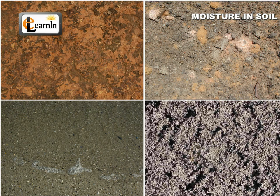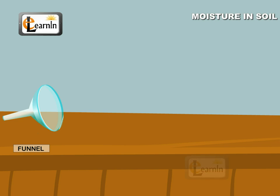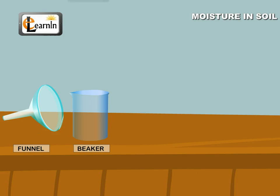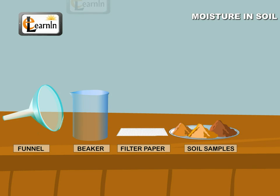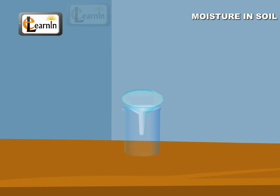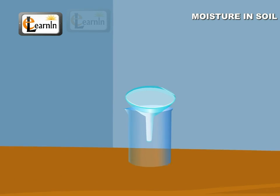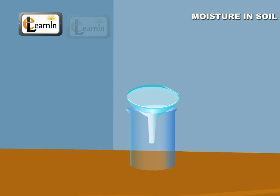For this experiment, we need a funnel, a beaker, filter paper, soil samples and a dropper. Take a funnel and place it on a beaker.